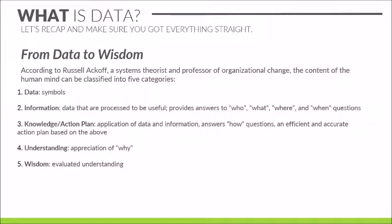Based on a professor of organizational change, Rusev Arkhoff, there are five different categories about how a human mind thinks and works. Starting with category number one: data, which are symbols and inputs that we have in our mind but are not so useful by themselves. That's why we approach the second step, information, where data has been used wisely, combined and correlated to see what kind of information we can get. This information answers questions like who, what, where, and when.